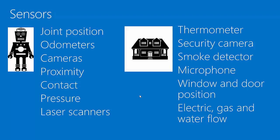A house also has sensors, but they tend to be different types of things. Thermometers measure air temperature. Security cameras can take pictures in rooms. Smoke detectors, of course. Microphones can measure sound. Window and door position and latched-unlatched sensors. And the flow of electricity, natural gas, and water — all things that you can measure in a house, and often are measured.